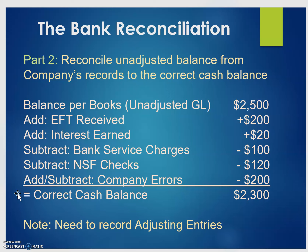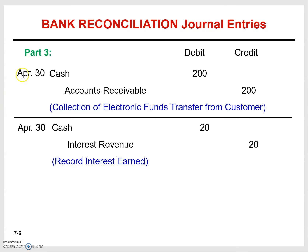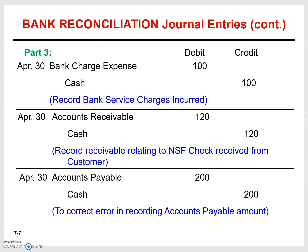For each of the items on the company's side, you will need to record an adjusting journal entry. For the collection of the electronic funds transfer from the customer, debit cash and credit accounts receivable. For interest earned, debit cash and credit interest revenue. To record the bank service charge expense, debit the bank charge expense account and credit cash, because that amount was deducted from the bank statement by the bank.